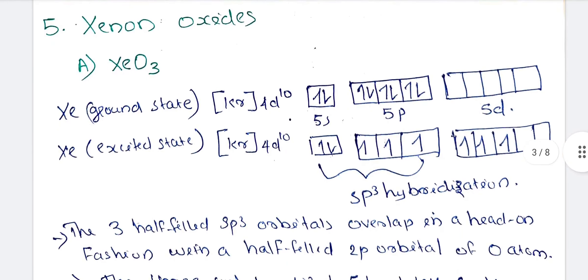Next, Xenon Oxides. We have discussed Xenon fluorides. Now XeO3, Xenon Trioxide. Xenon ground state is [Kr]4d10 5s2 5p6. In the excited state, excitation occurs in the 5p orbital.